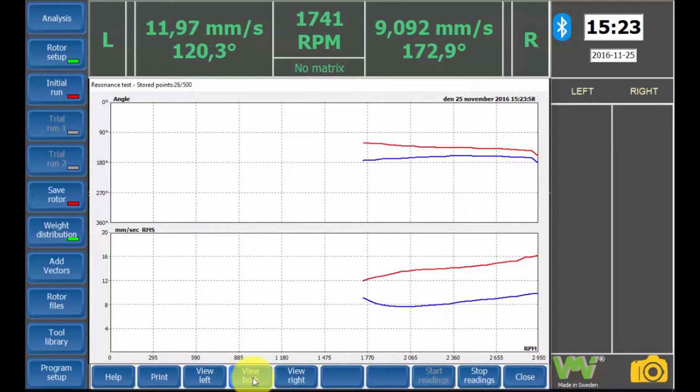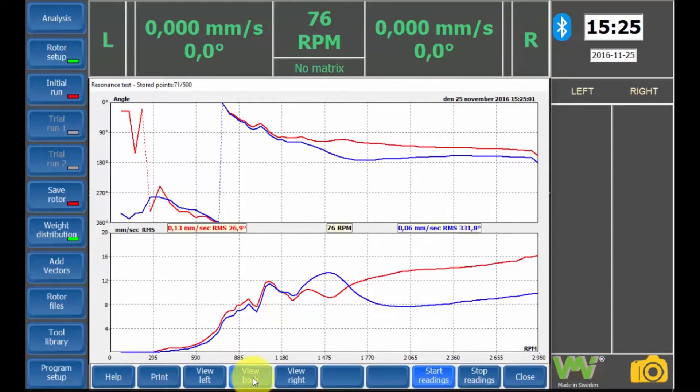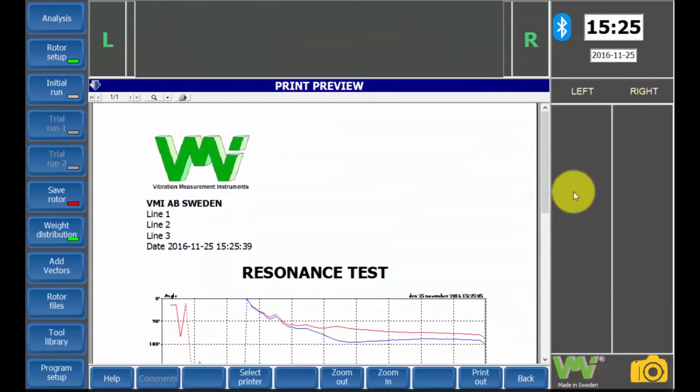For the sake of this video, we speed up the process. From the tests, we can see that the angle is steady between 3000 and 1700 revolutions per minute. This means that the router can be balanced somewhere along this range. The results can be printed or saved as a PDF file.